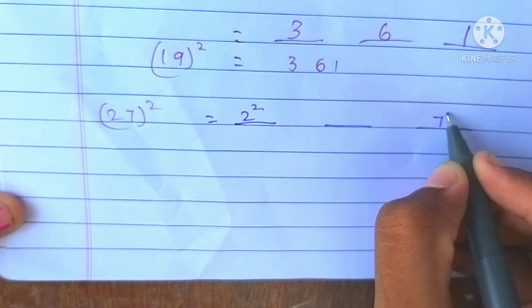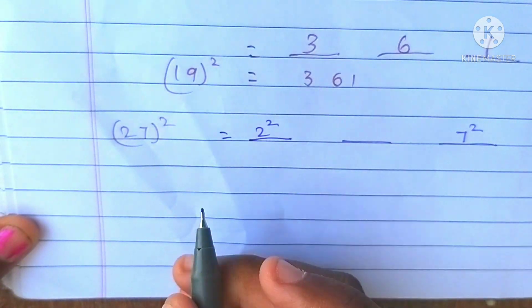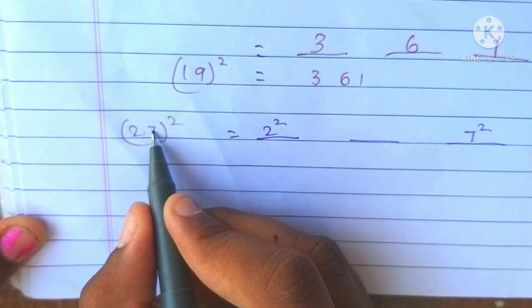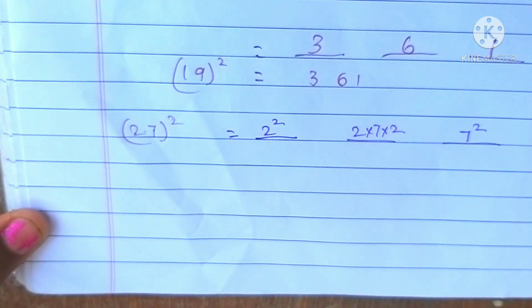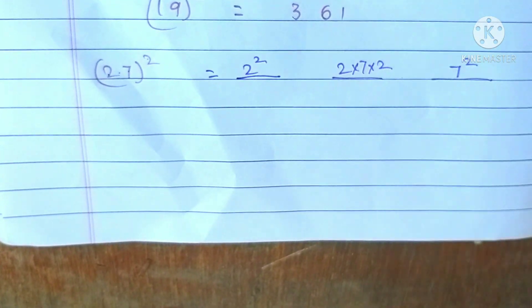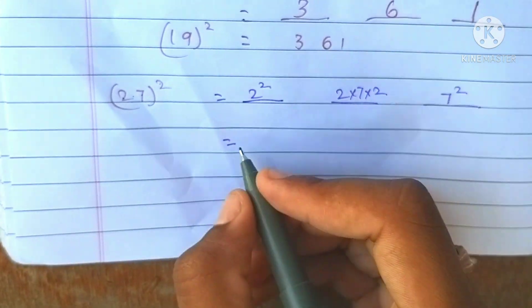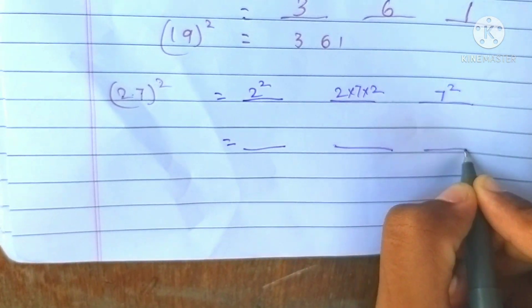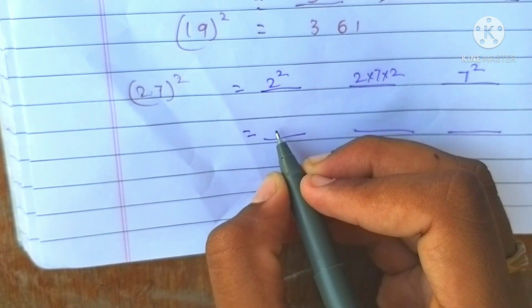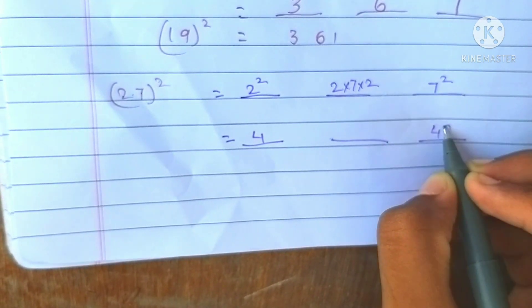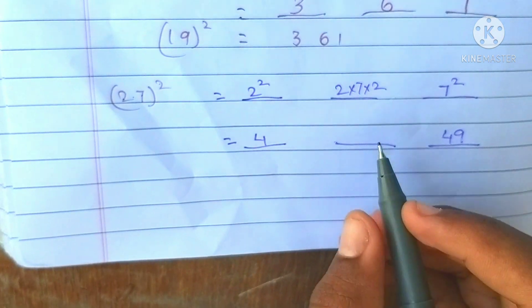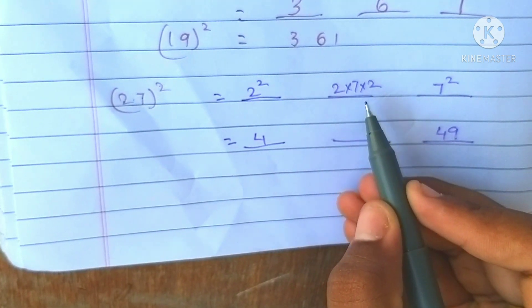For 27 square: 2 square is 4, 7 square is 49, 2 times 7 is 14, and 14 times 2 is 28.